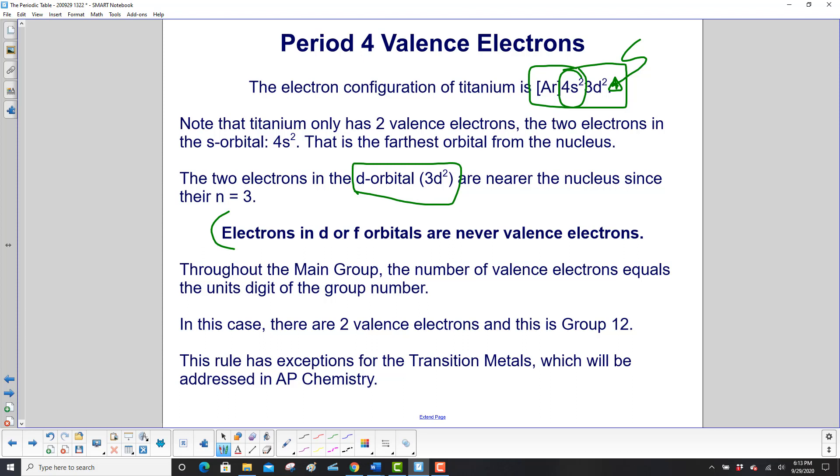Here's the key point: Electrons in d or f orbitals are never valence electrons. Throughout the main group, the number of valence electrons equals the units digit of the group number. In this case, there are two valence electrons, and this is group 12. The rule has exceptions for the transition metals, but that's going to be held off until we get to AP chemistry.